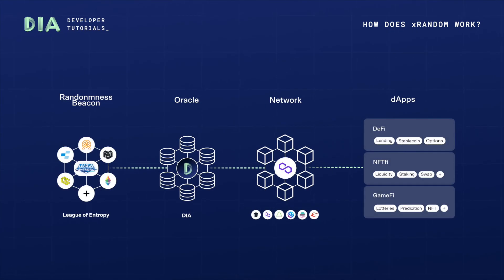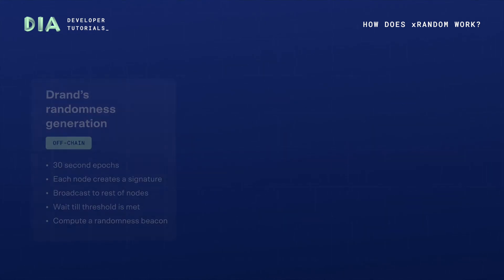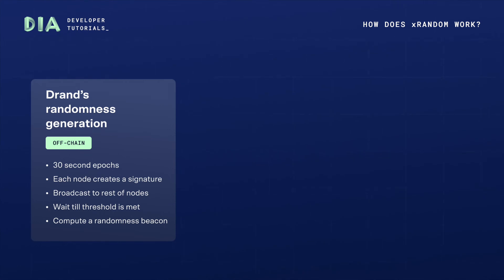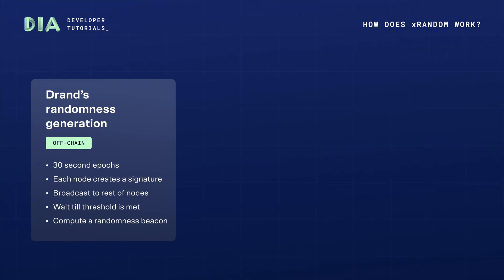To offer distributed and verifiable randomness on-chain, DIA leverages DRAND's distributed randomness beacon, enabling verifiable, unpredictable, and unbiased random numbers. From random number generation to on-chain distribution, DRX Random operates as follows. First, DRAND randomness generation: in every DRAND epoch, currently set at 30 seconds, each of the nodes that form the DRAND network generates a partial signature, which it broadcasts to the rest of the nodes. Once any node has enough — that is, a threshold number of signatures — it computes the new randomness beacon from the network, which is the hash of the signature aggregate of the participants in the current round from the League of Entropy.